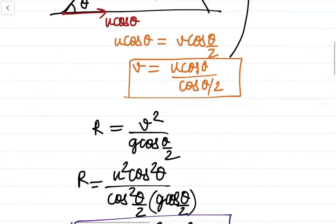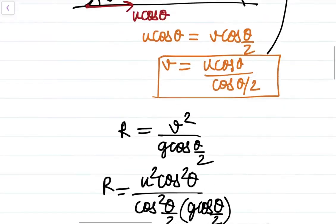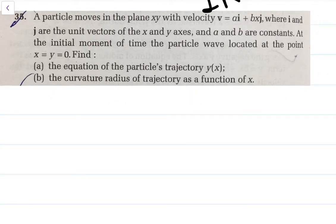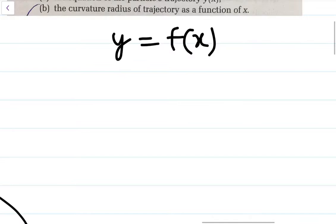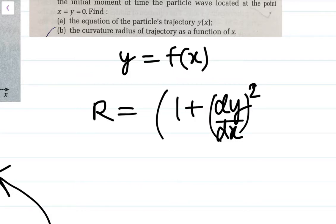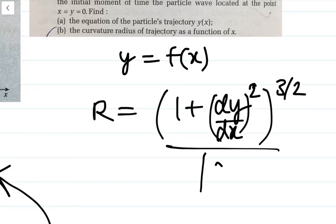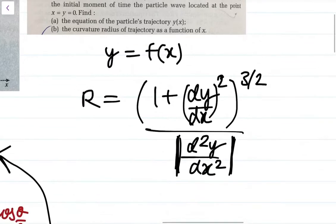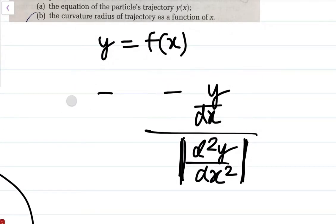This is our answer and we didn't mug up any formulas — there is no rocket science in this problem, it was very easy. For any trajectory where a particle follows y as a function of x, you can also remember the formula: radius of curvature equals the modulus of (1 + (dy/dx)²) raised to the power 3/2, divided by the second derivative d²y/dx². But there's no need for this formula if you understand the basics.